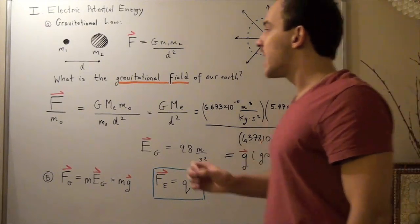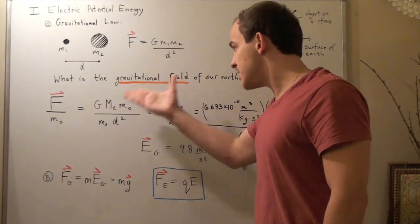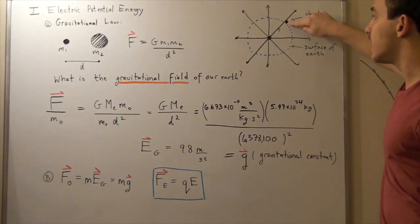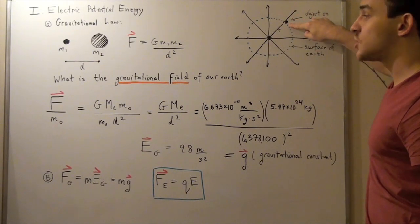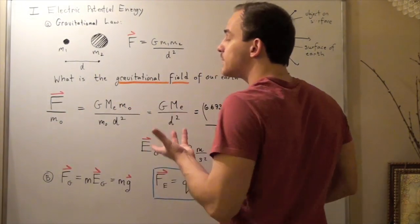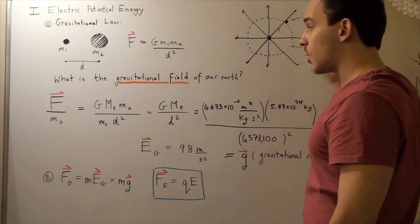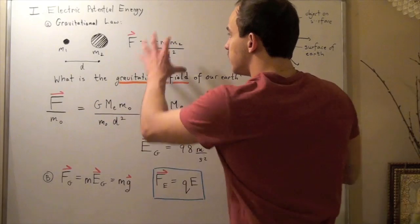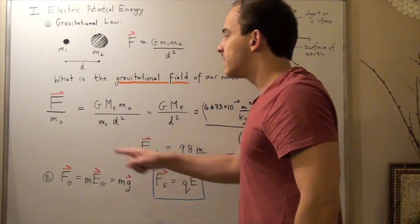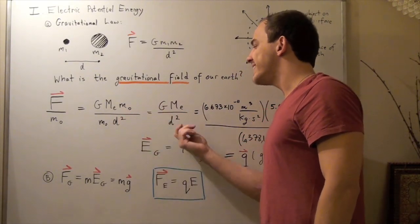To find the gravitational field, we take our force and divide it by the mass of the object. So: gravitational field equals the force due to gravity divided by the mass of the object on the surface, a distance r away from the point mass of the Earth. Plugging in Newton's gravitational law, the mass of the object cancels, and we get gravitational field equals G times the mass of the Earth divided by r squared.